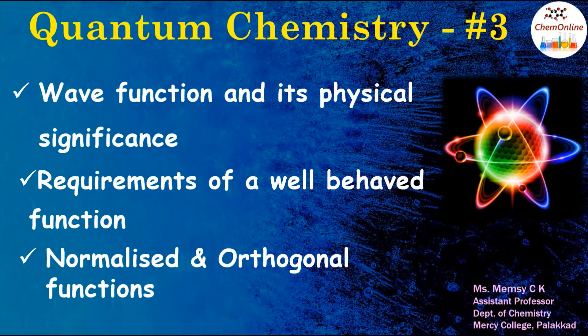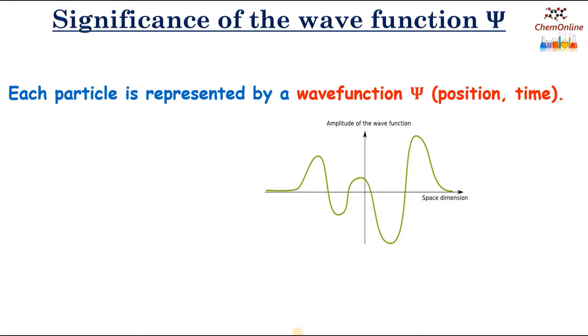In this video we will have a detailed discussion on the wave function and its physical significance. What are the requirements of a well-behaved function, and what are normalized and orthogonal wave functions? In the introduction class we saw that in quantum mechanics an electron is treated as a standing wave and it is represented using a wave function that is ψ.